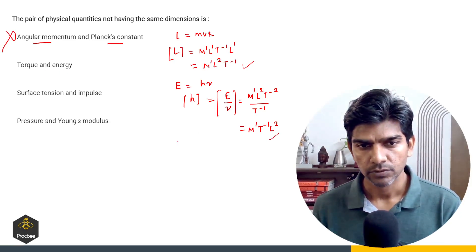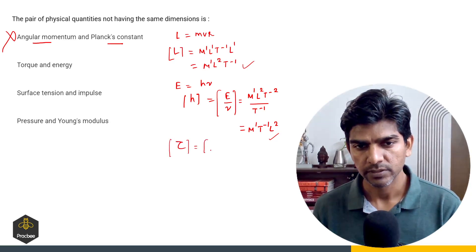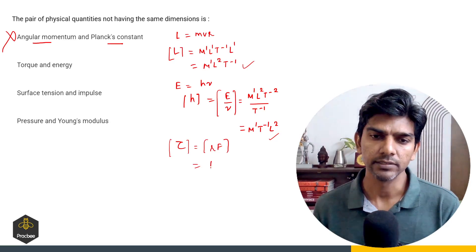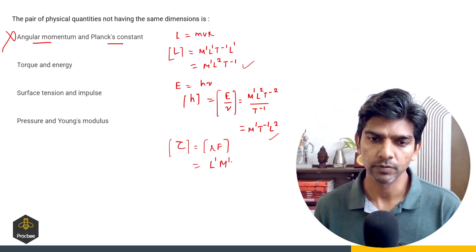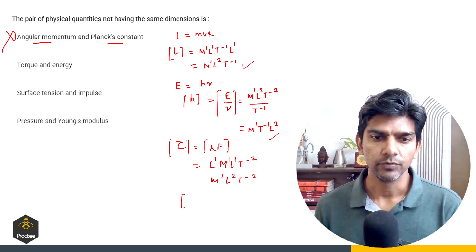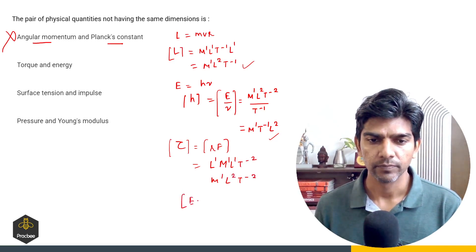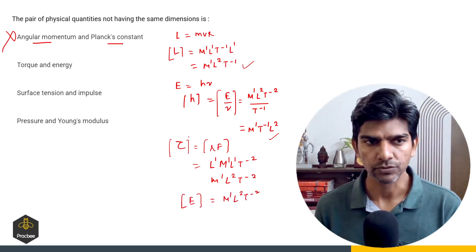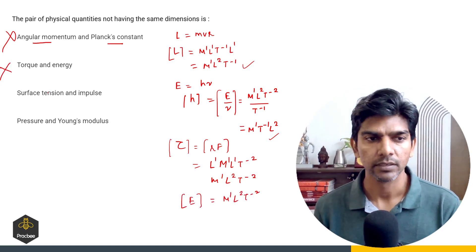Torque and energy: the dimension of torque is the product of R and F. R is L raised to power 1, force is M raised to power 1, L raised to power 1, T raised to power minus 2. That gives M raised to power 1, L raised to power 2, T raised to power minus 2. And for energy it is also M raised to power 1, L raised to power 2, T raised to power minus 2. So option 2 is also incorrect.